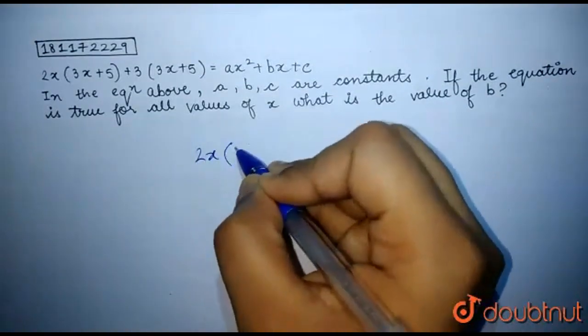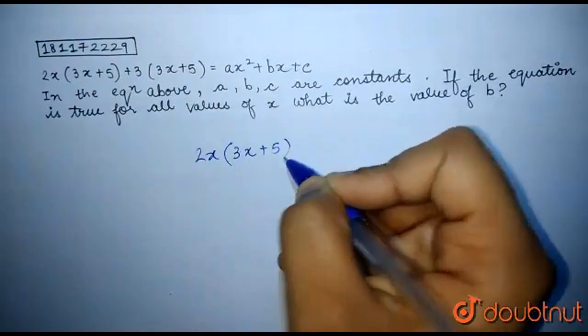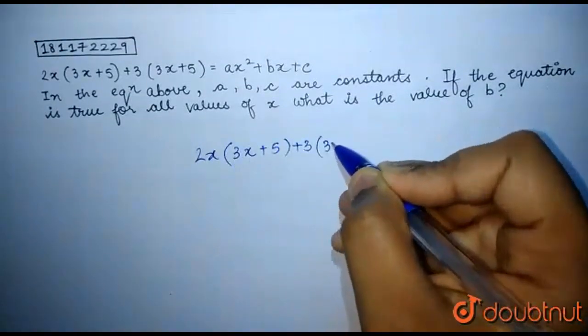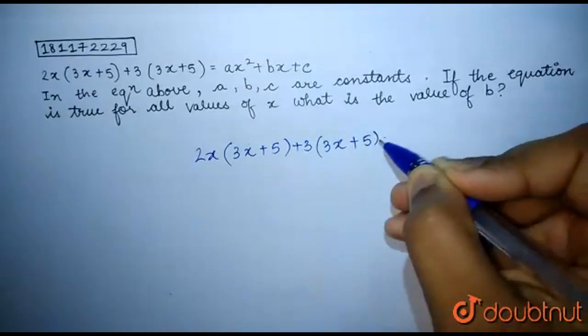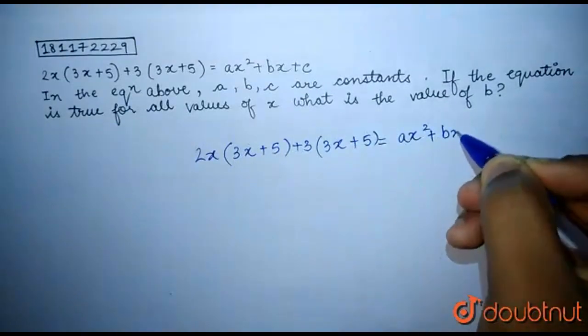Now, we have been given 2x times 3x plus 5 plus 3 times 3x plus 5 is equal to ax square plus bx plus c.